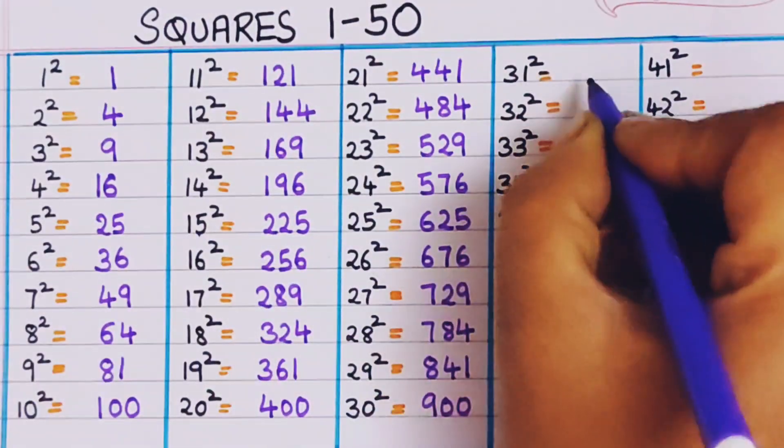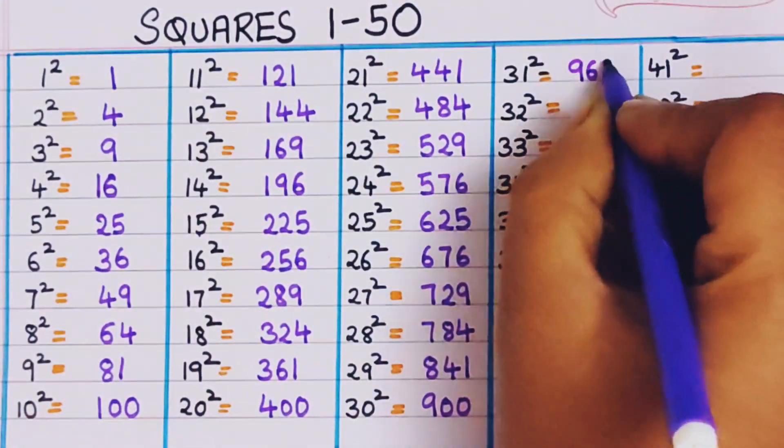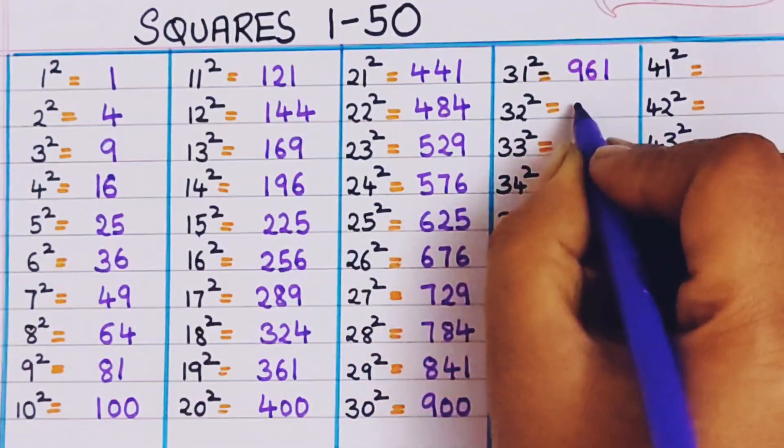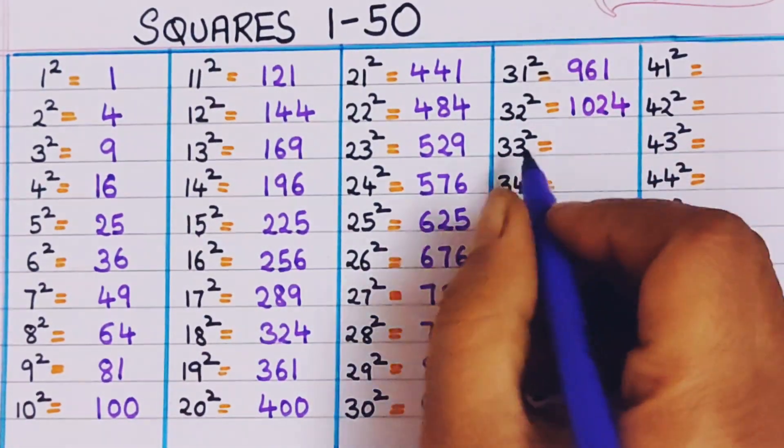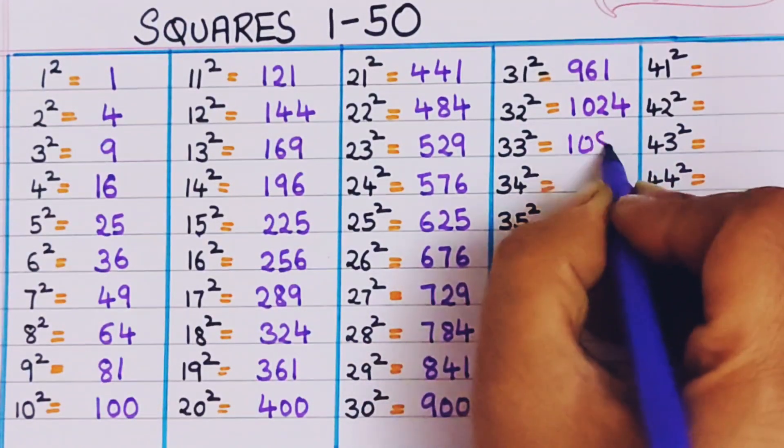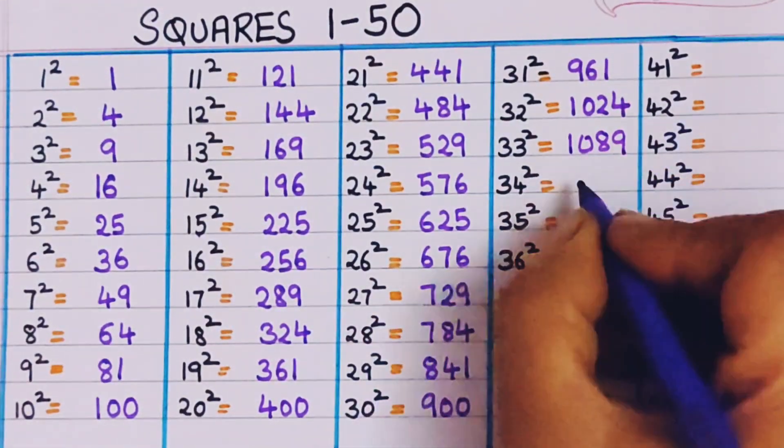31 square, 961. 32 square, 1024. 33 square, 1089.